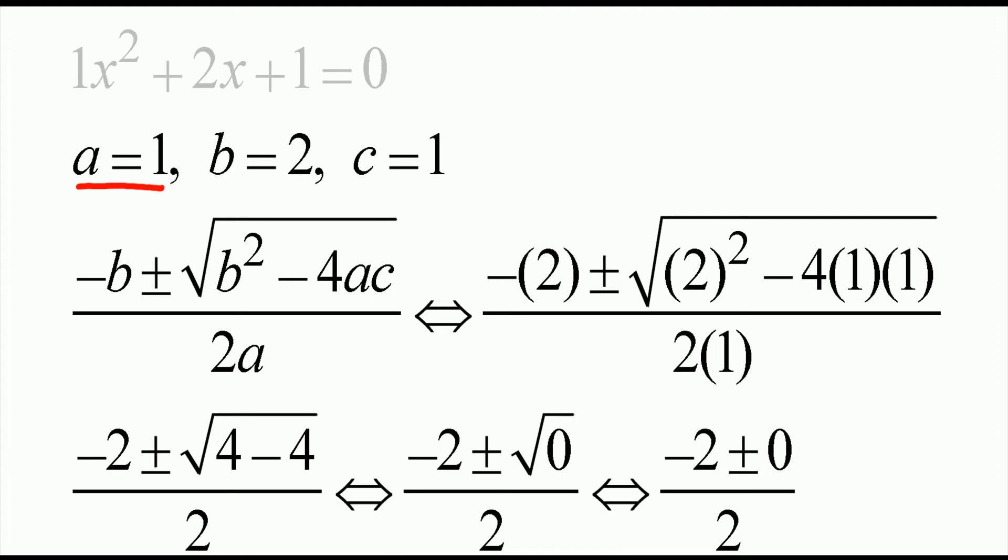So a equals 1, b is equal to 2, c is equal to 1. Negative b plus or minus square root of b² minus 4ac, divided by 2a.